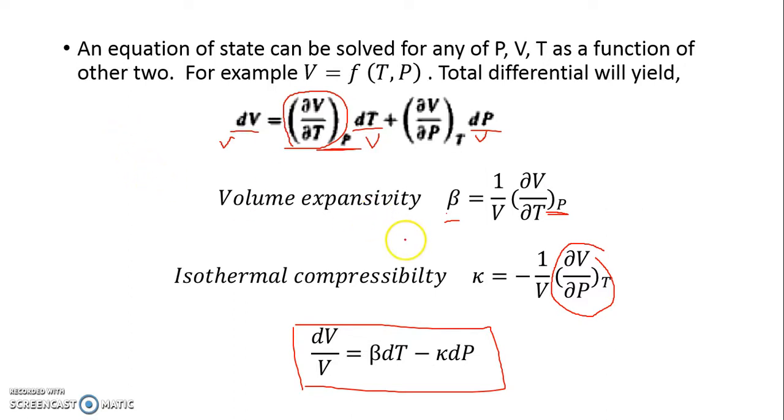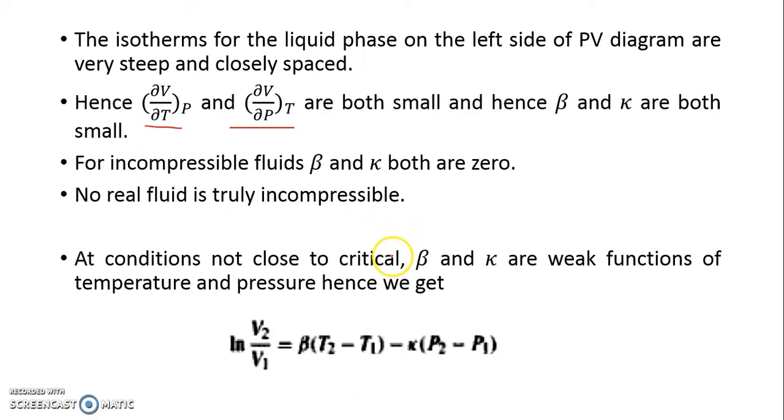Though they are functions, they are weak functions. If they are weak functions, for all practical purposes, you can ignore their dependency on temperature and pressure and consider them to be constant. You can find that ln(V2/V1) equals β(T2 - T1) minus κ(P2 - P1). This is the simplest equation applicable to liquid phase.